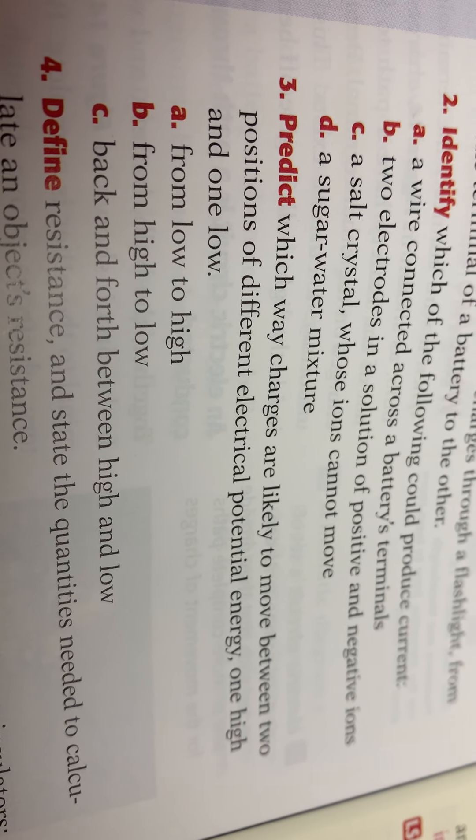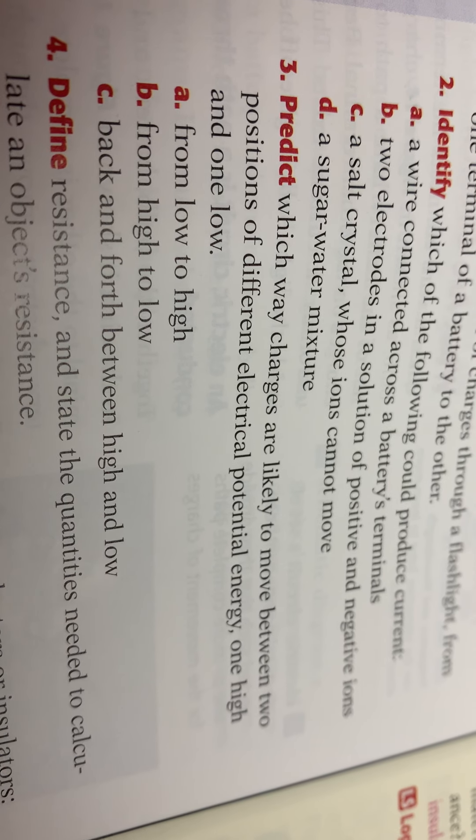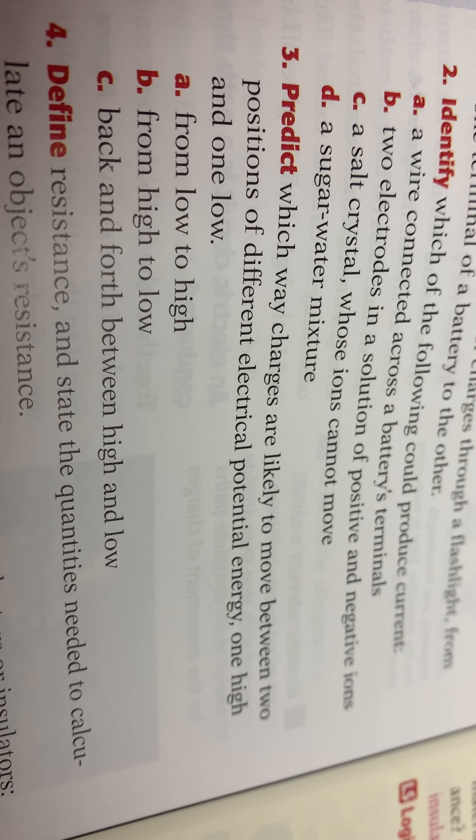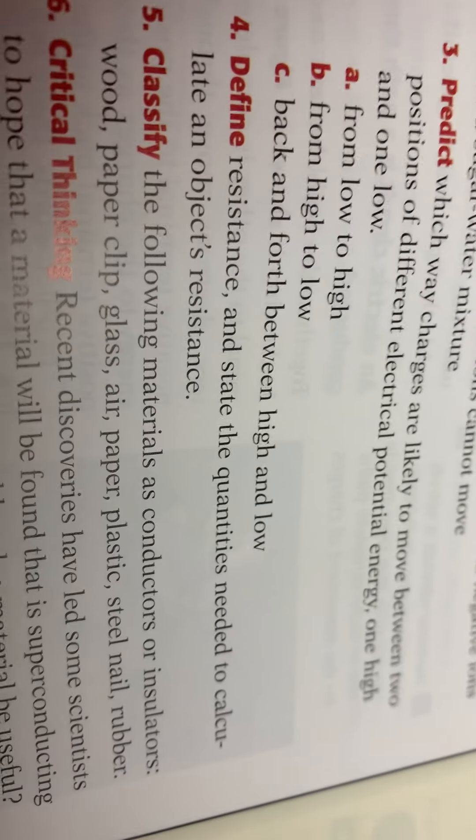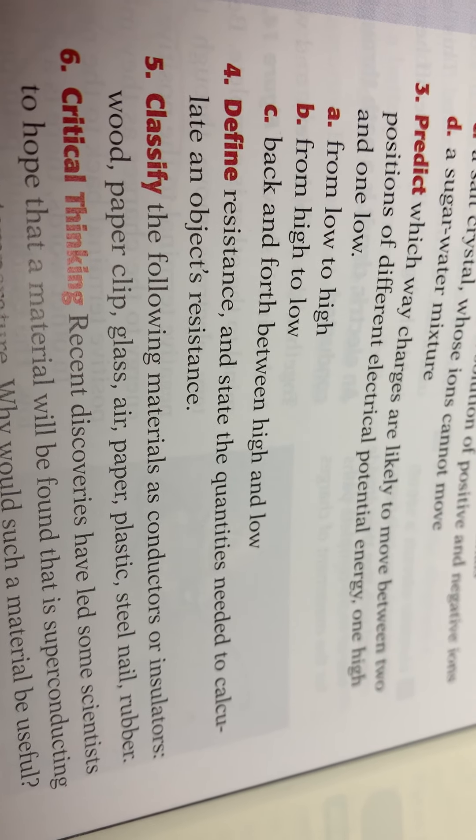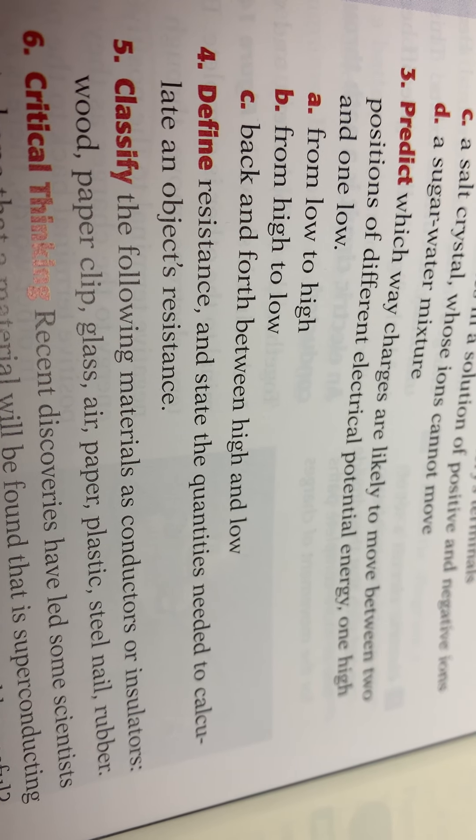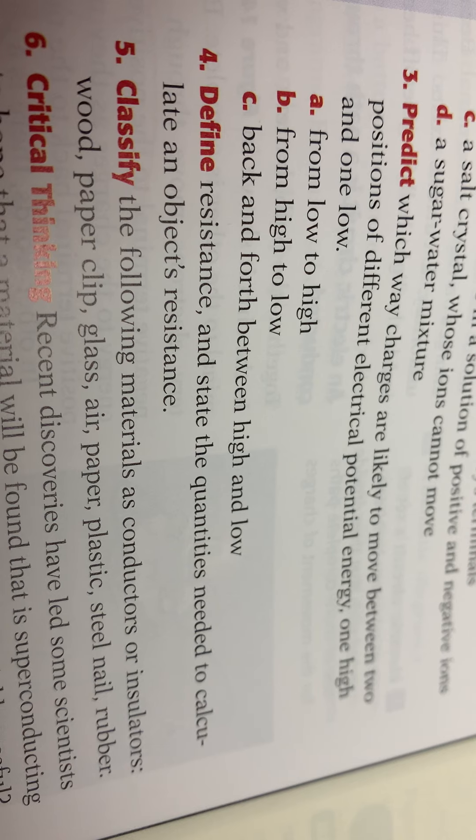Number three, the answer is B, from high to low, they're going to go from high to low. Number four, resistance is the opposition posed by a material or device to the flow of charge. To calculate it you need to know the voltage and the current, the volts and the amps.